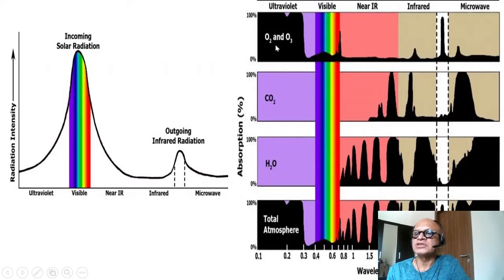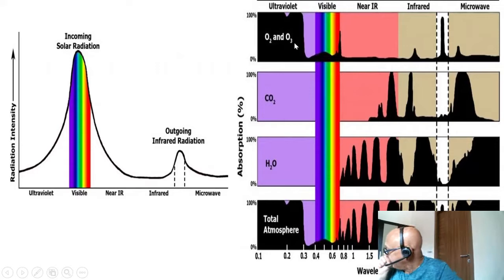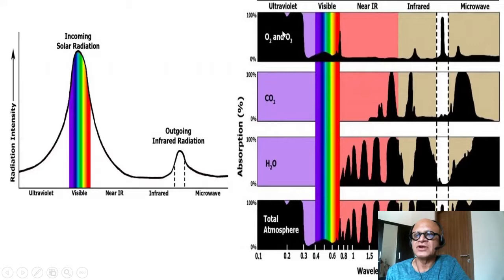If we quickly look at the absorption spectra at each band—ultraviolet, visible, near IR, infrared, and so on—the good thing is that oxygen and ozone in the stratosphere absorb almost all of the UV, which is good for us because UV damages all life forms, DNA, and so on.